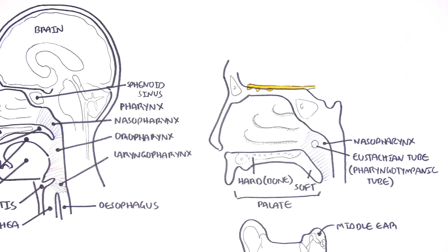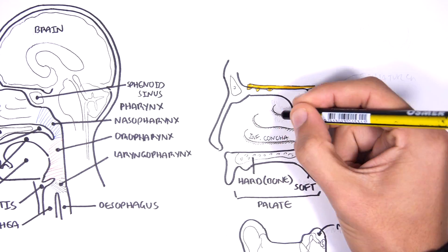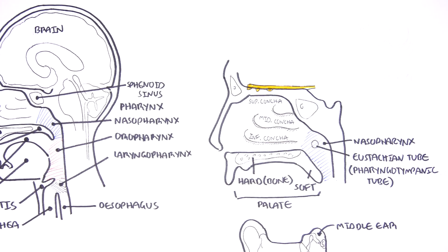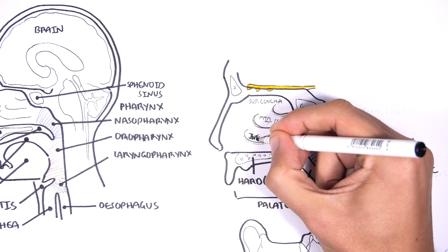On each side of the nasal cavity, we also have these things called turbinates, which are also known as nasal conchae, or concha for one. There is the inferior concha, middle concha, and superior concha. The function of the conchae are to help warm and moisturize air that is flowing through the nose.